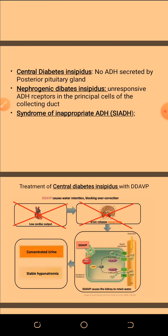The mechanism of action of desmopressin acetate (DDAVP) is that it causes water retention and blocks overcorrection during stable hyponatremia. It causes the kidneys to retain water.